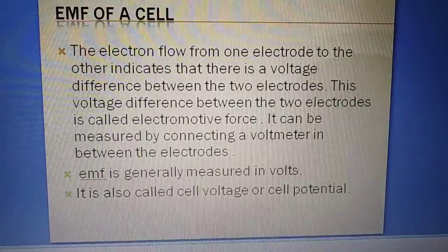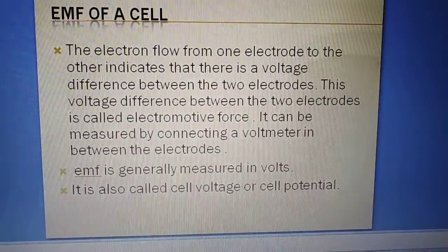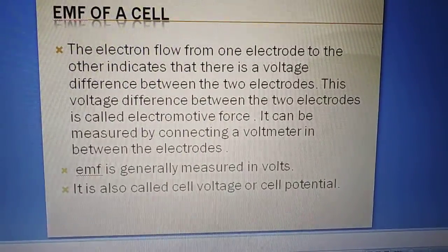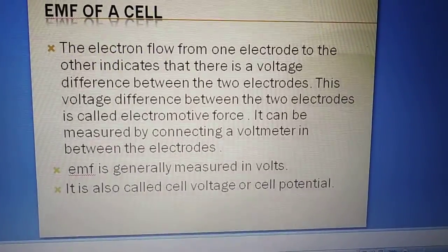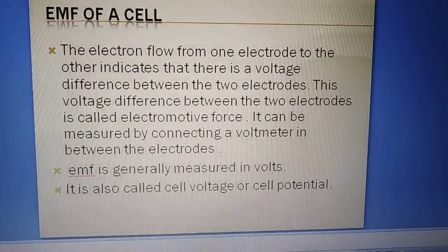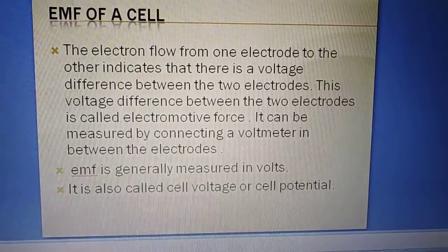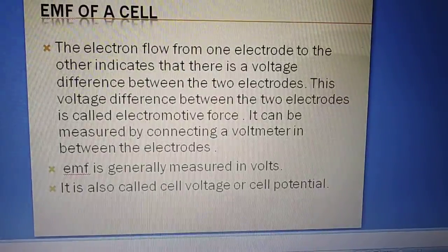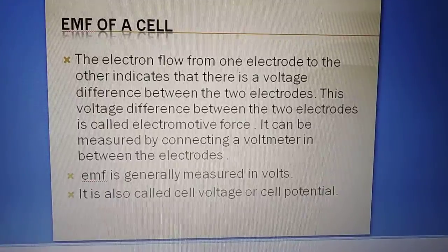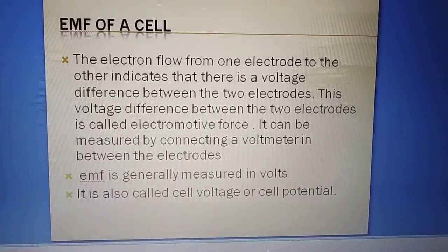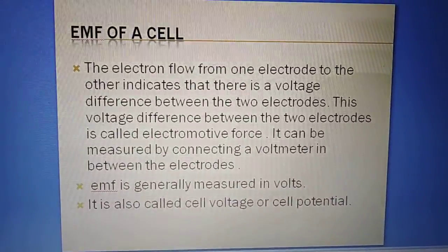When electron flow from one electrode to the other, it indicates that there is a voltage difference between the two electrodes. This voltage difference between the two electrodes is called electromotive force, and it can be measured by connecting a voltmeter in between the electrodes. EMF is generally measured in volts and it is also called cell voltage or cell potential.